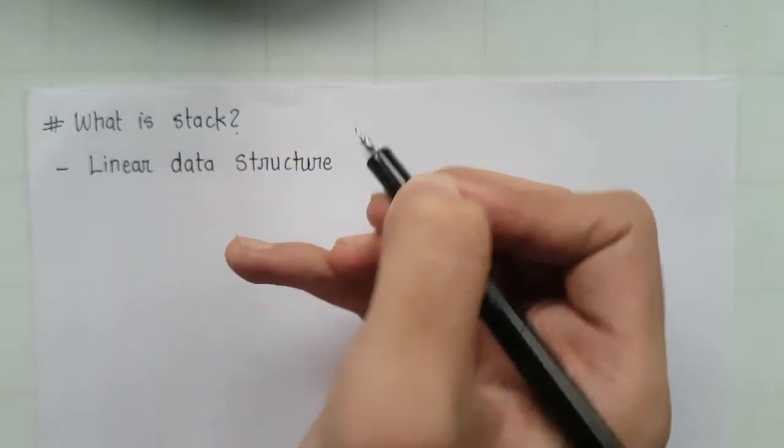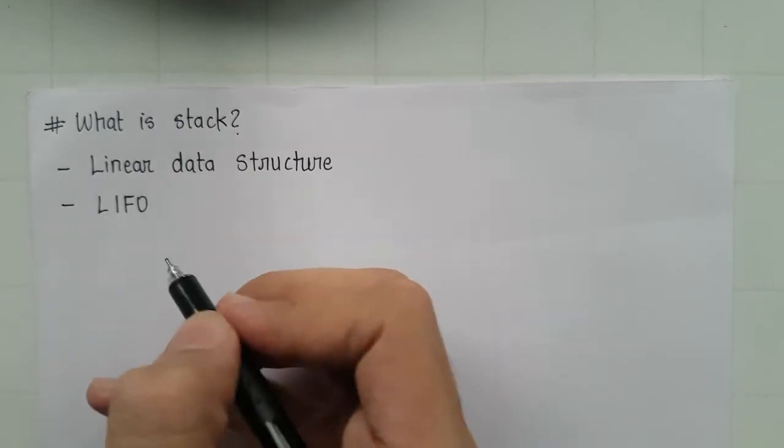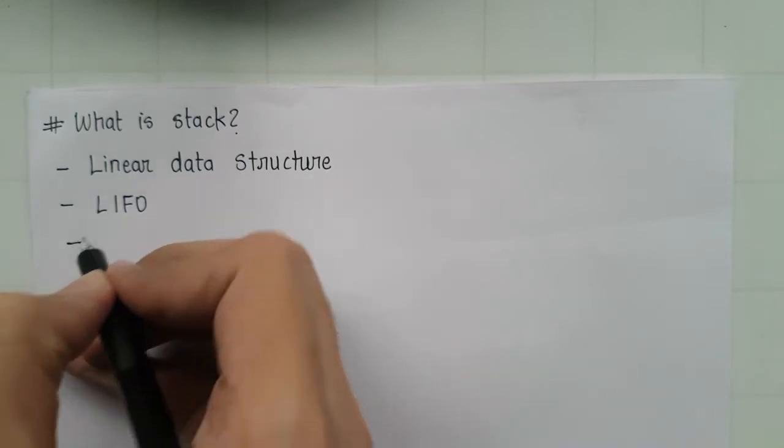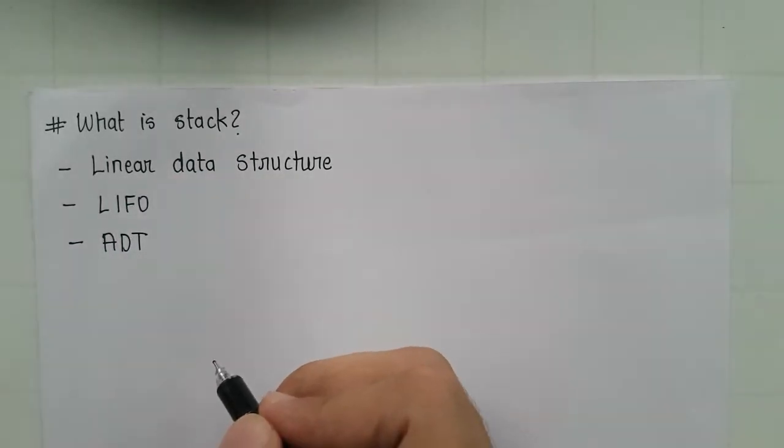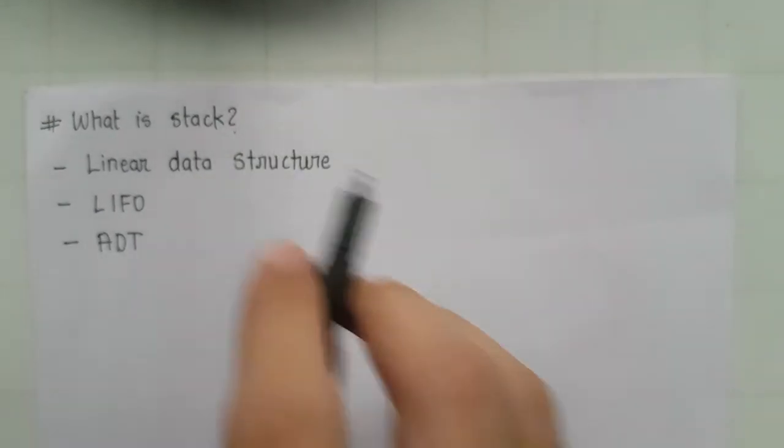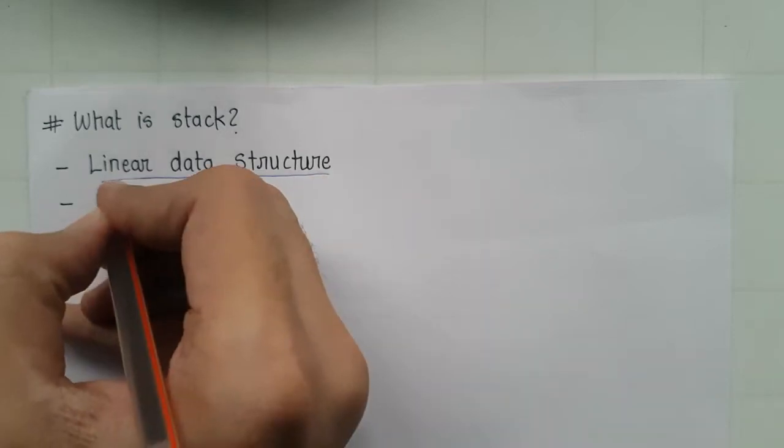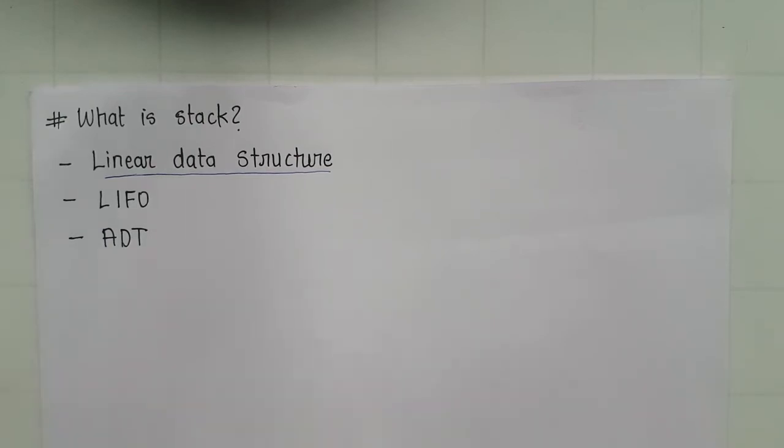Also it follows the LIFO policy, that is last in first out. Also stack is an ADT, that is the abstract data type. So we'll see one by one. So what is linear data structure? It means that the elements or the data is arranged in a sequential manner, and that is the meaning of linear data structure.